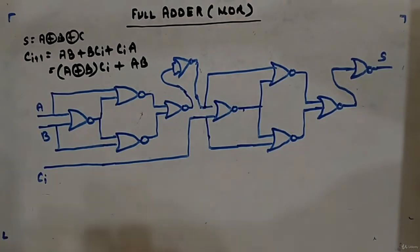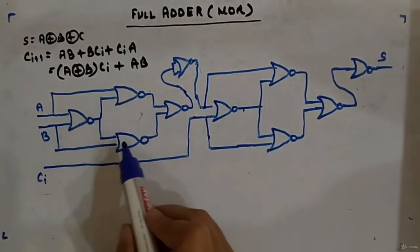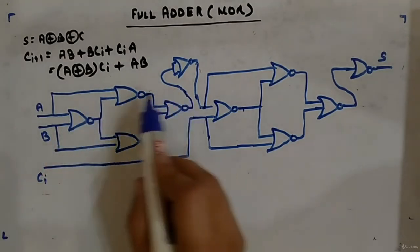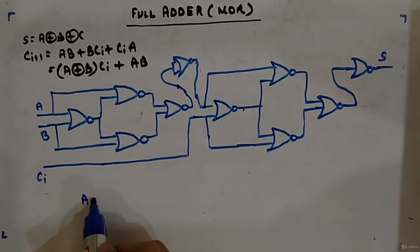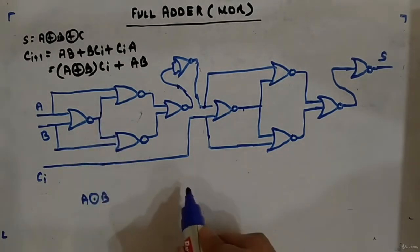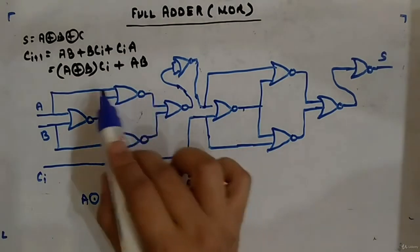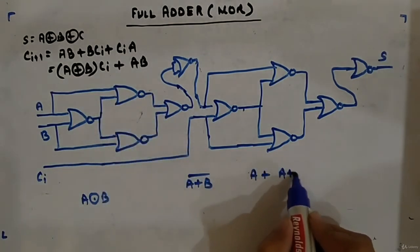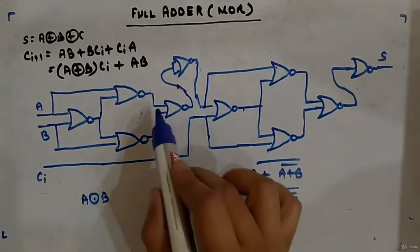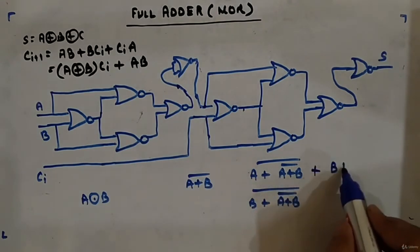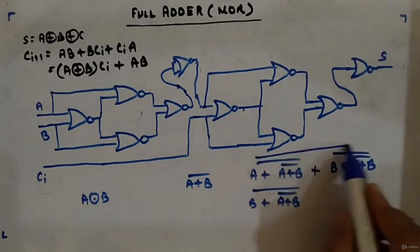It looks complex but it is repetitive. This arrangement of four NOR gates will produce A XOR B. At the first position the output is A NOR B, at the next position it is (A plus B) bar bar, then (B plus (A plus B) bar) whole bar, and finally you take the NOR between these two to get the expression.